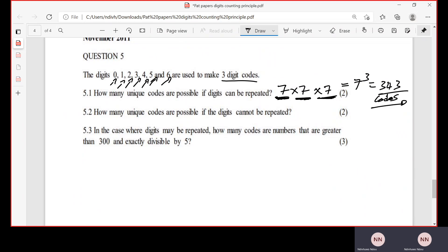codes that can be formed if repetition of digits is allowed. So 5.2: how many unique codes are possible if the digits cannot be repeated? So we want to form three-digit codes. In